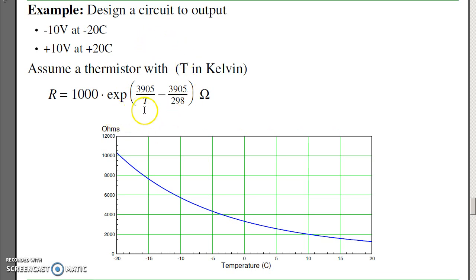The first step is to model the thermistor. This would be the two-term model for a thermistor. At 25 Celsius, which is 298 Kelvin, this is zero. E to the zero is one, so I'm at one kilo ohm. As temperature goes up, the resistance drops. So this is what the resistance looks like versus temperature.